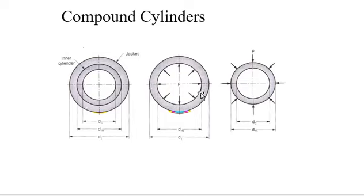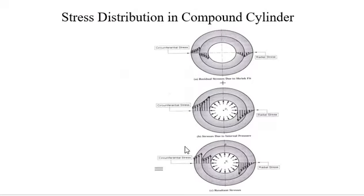As the jacket or outer cylinder cools, it tends to contract on the inner cylinder, inducing compressive stress in the inner cylinder and tensile stress in the jacket or outer cylinder. It is called a compound cylinder because two cylinders are used — the inner cylinder and the outer cylinder, which is called the jacket.